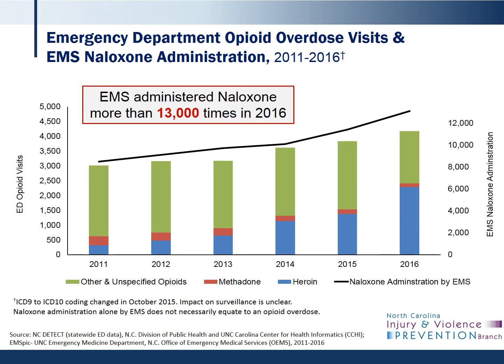Emergency department, or ED, visits for opioid overdoses are also increasing, as are the number of times EMS administered naloxone. The blue portion of the opioid overdose ED visit bars shows the proportion of heroin overdose ED visits, which have been on the rise. Though naloxone administration alone by EMS does not necessarily equate to an opioid overdose, it's worth noting that the use of naloxone by EMS has increased dramatically during this time.